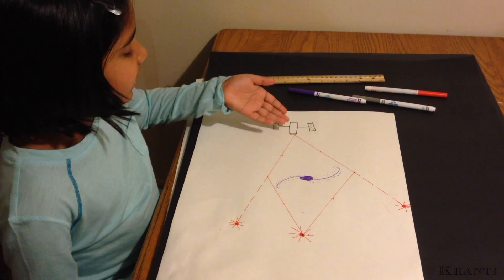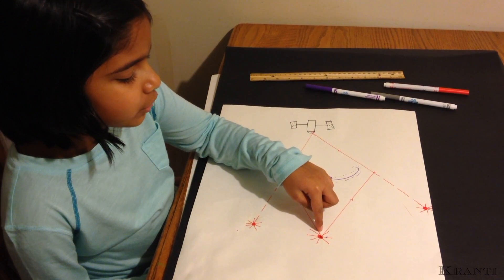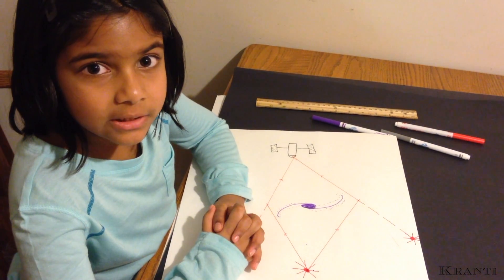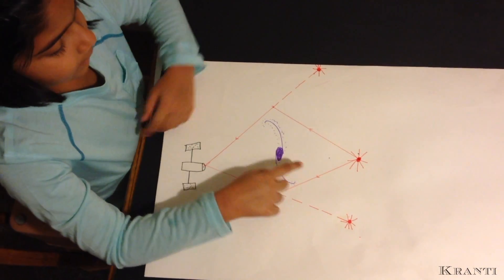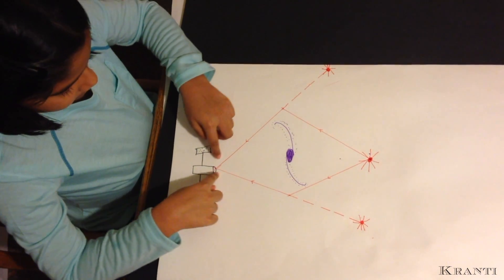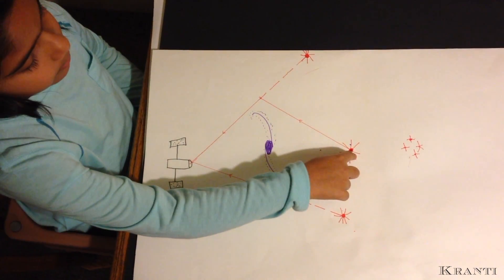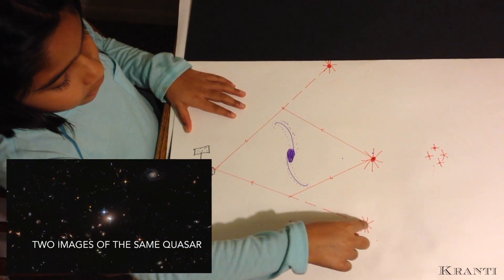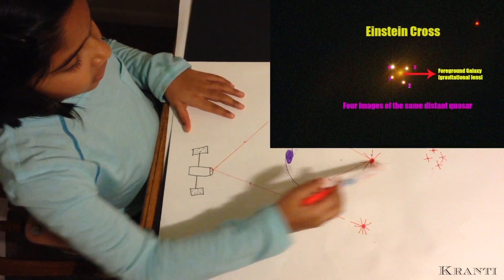This is the Hubble Space Telescope. This is a foreground galaxy, and this is a background star or background supernova. A galaxy is very massive, so it acts like a good gravitational lens. As you can see, the galaxy is bending light rays from the star toward the Hubble Space Telescope. When the telescope, gravitational lens, and background star are not in a straight line, you will see two images of the same star, or in some cases, an Einstein cross.